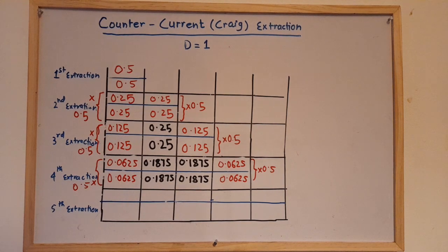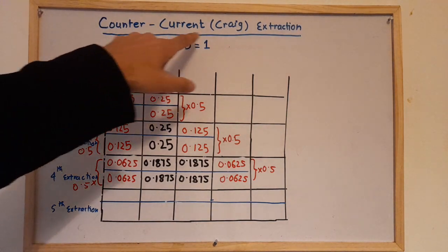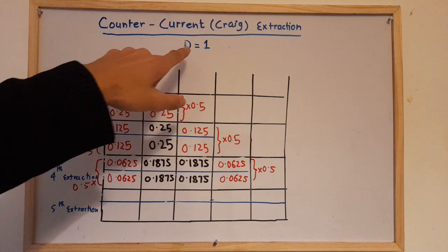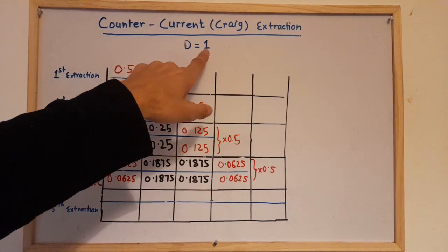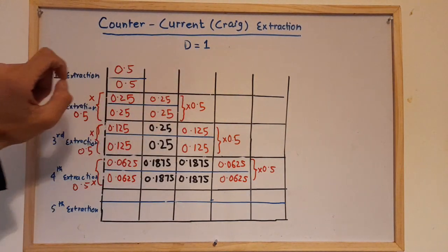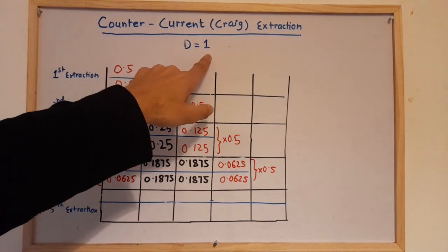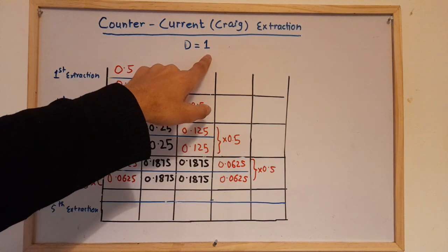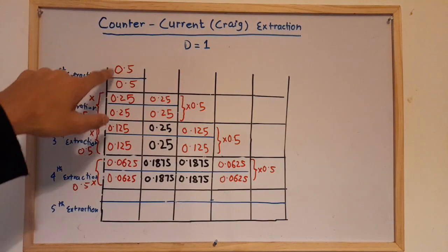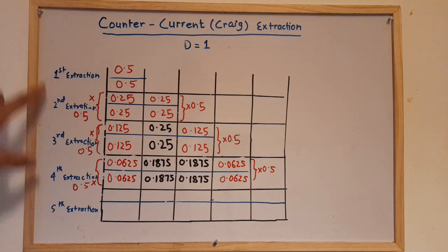Welcome to our channel. Today we'll be discussing counter-current Craig extraction. The distribution ratio is d=1, so the split is 50/50, giving us 0.5 and 0.5.